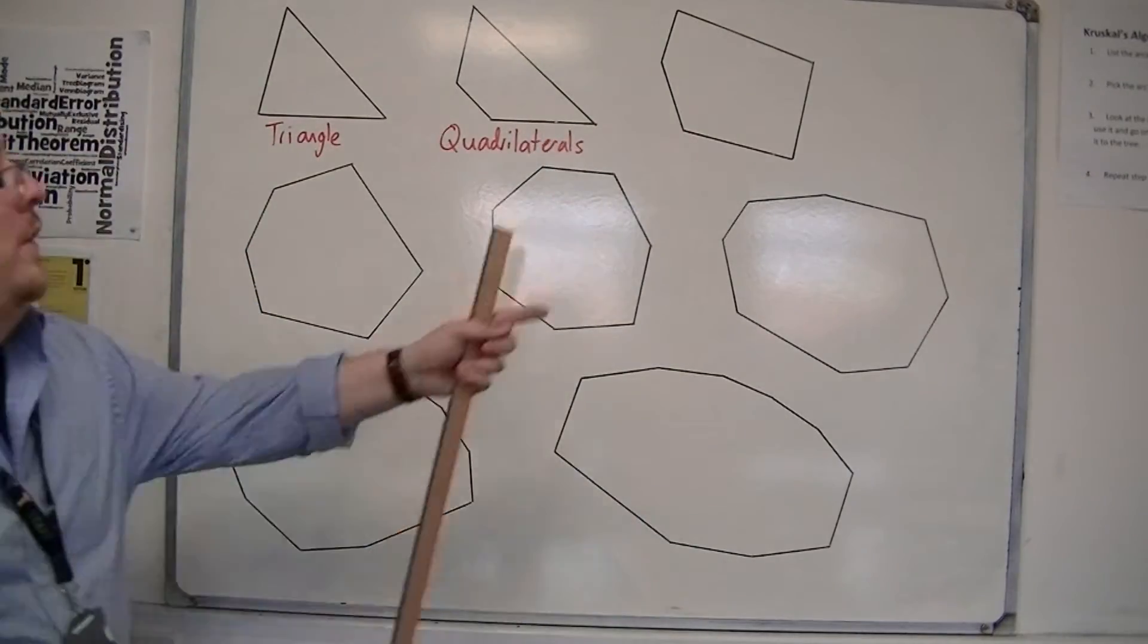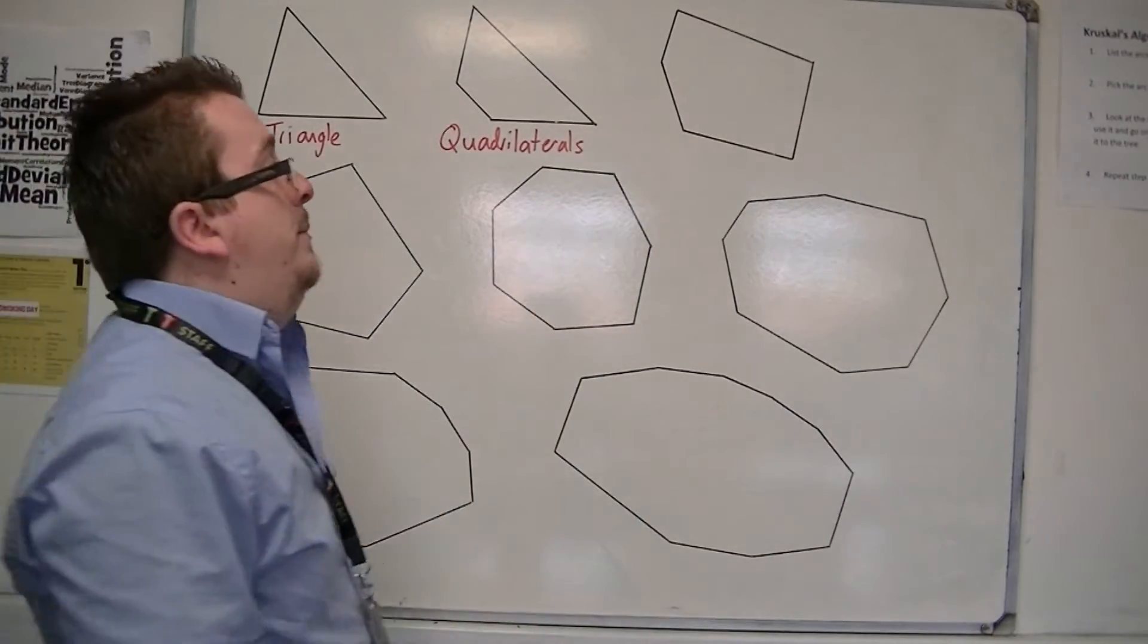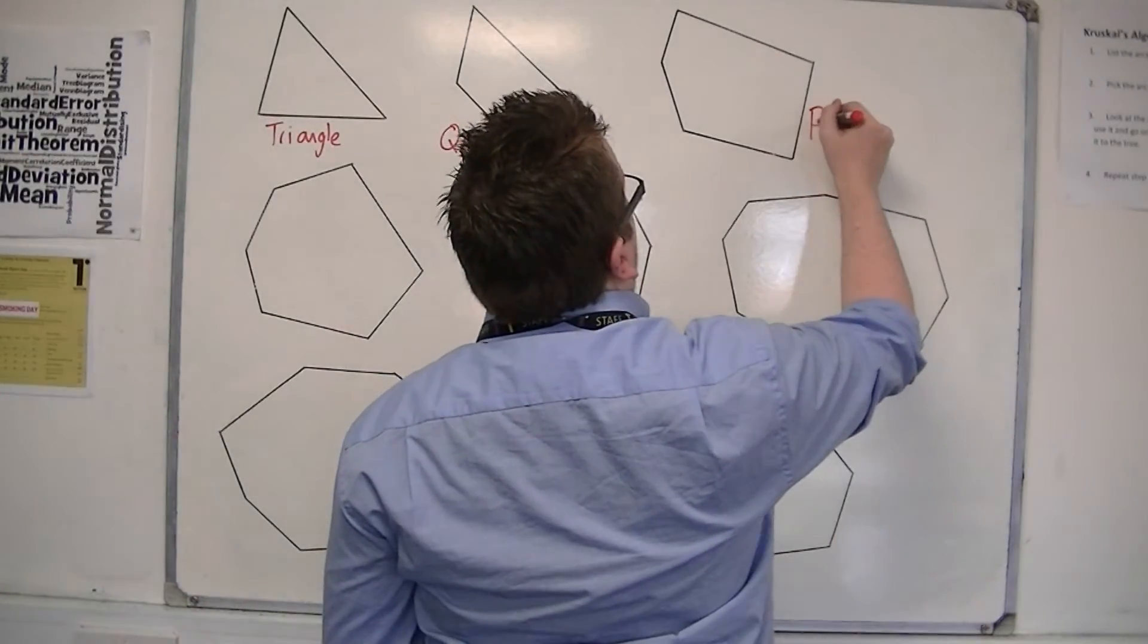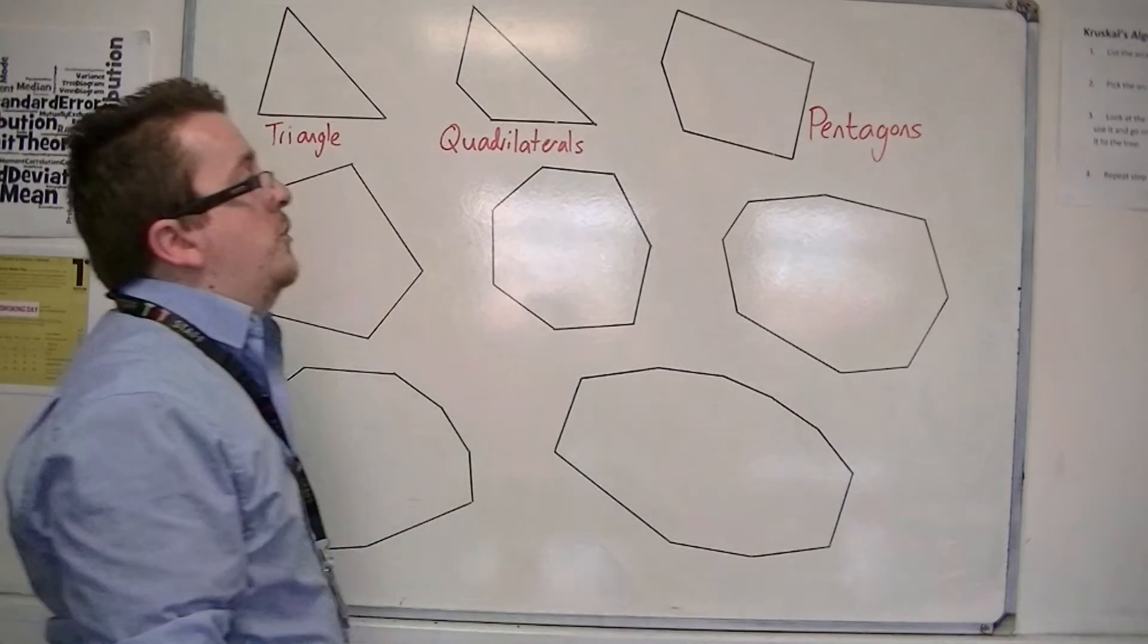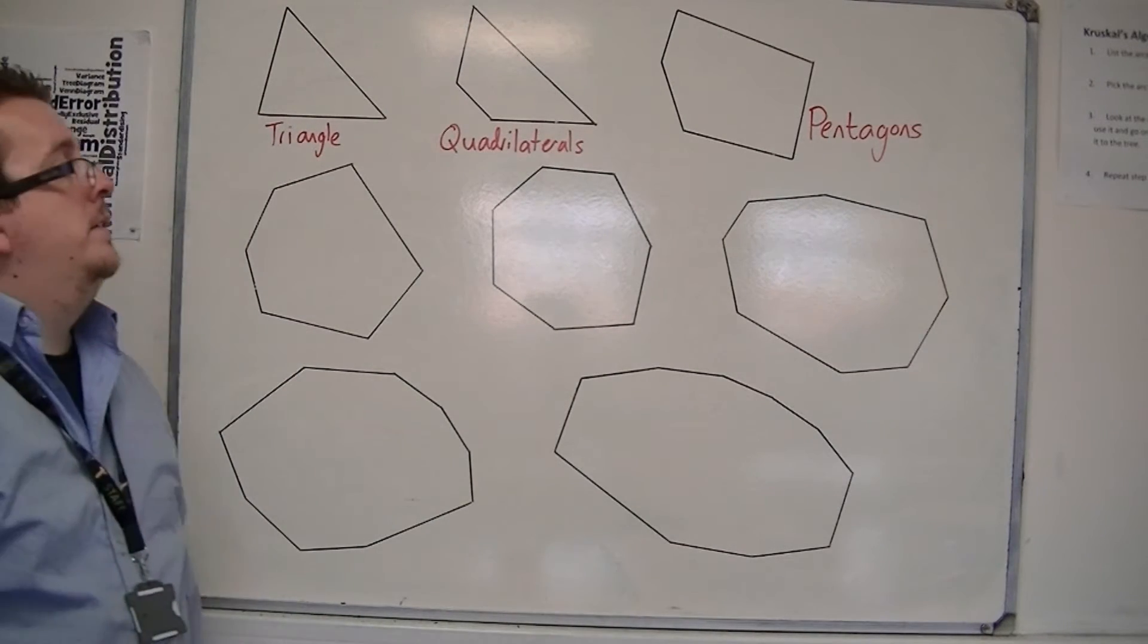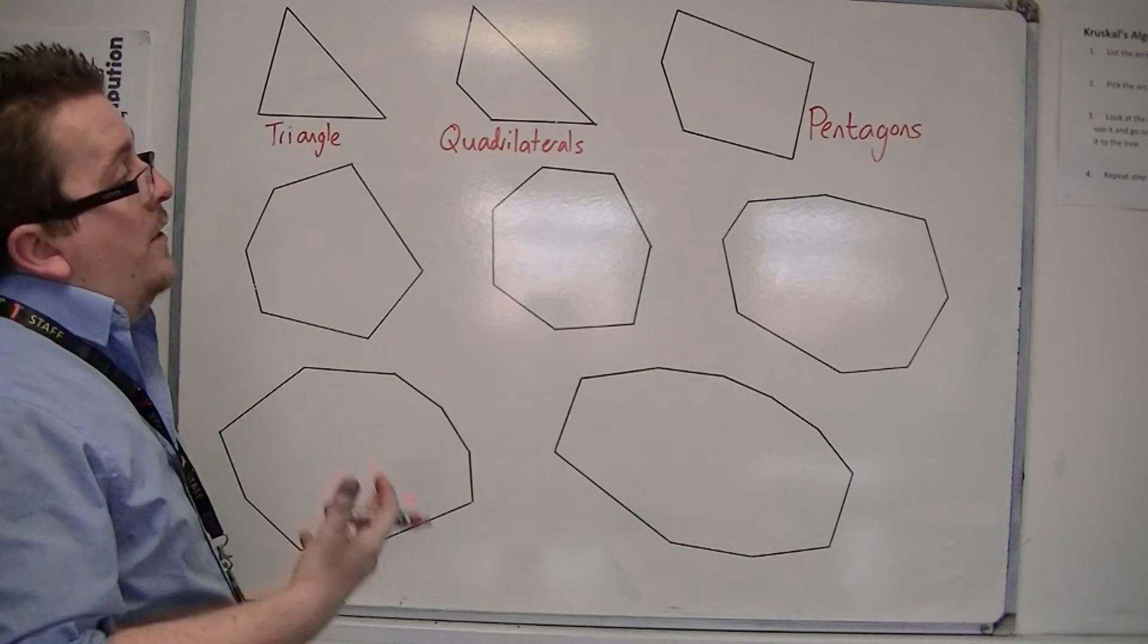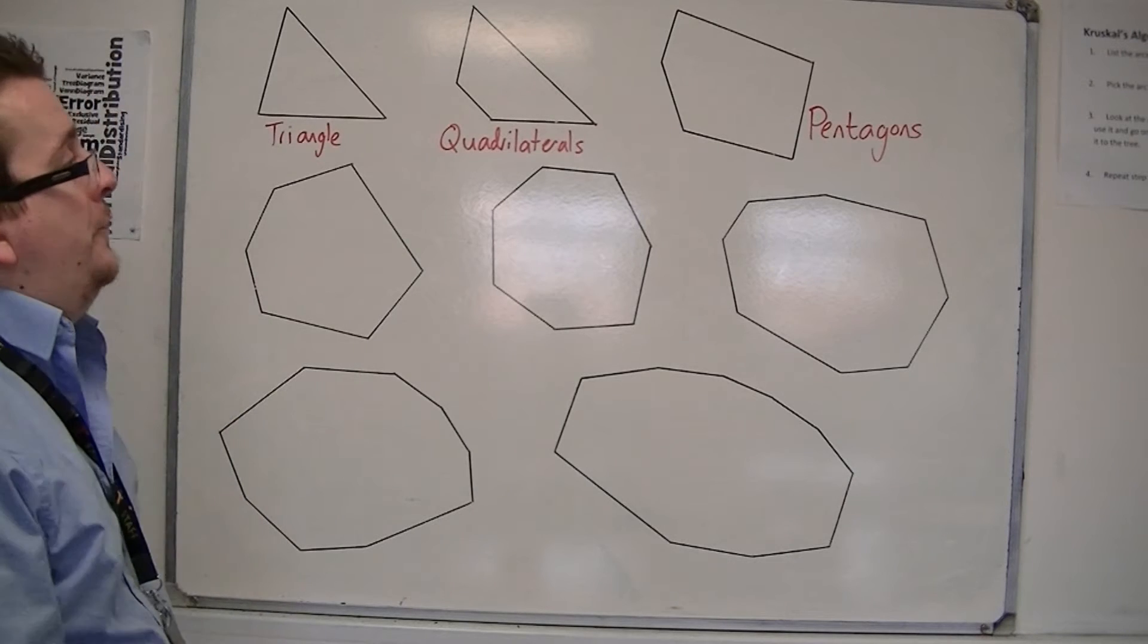Then we have the five-sided shapes, known as pentagons. So pentagram, five-sided. The building, the Pentagon, has five sides.